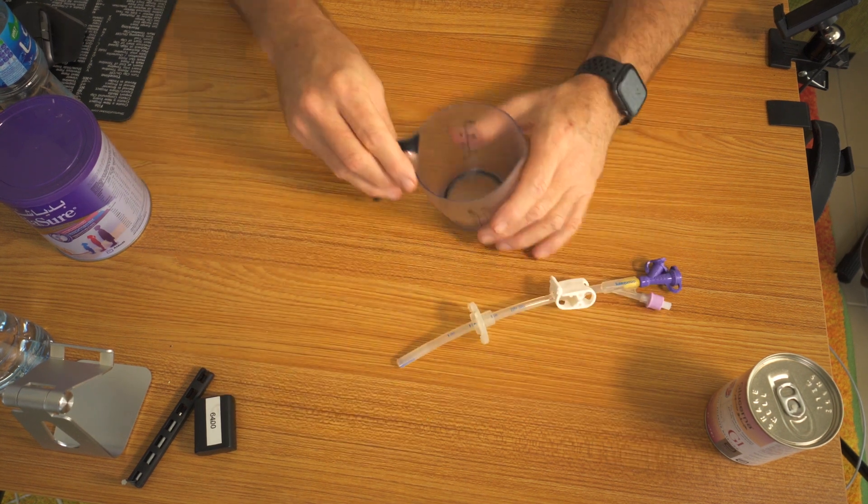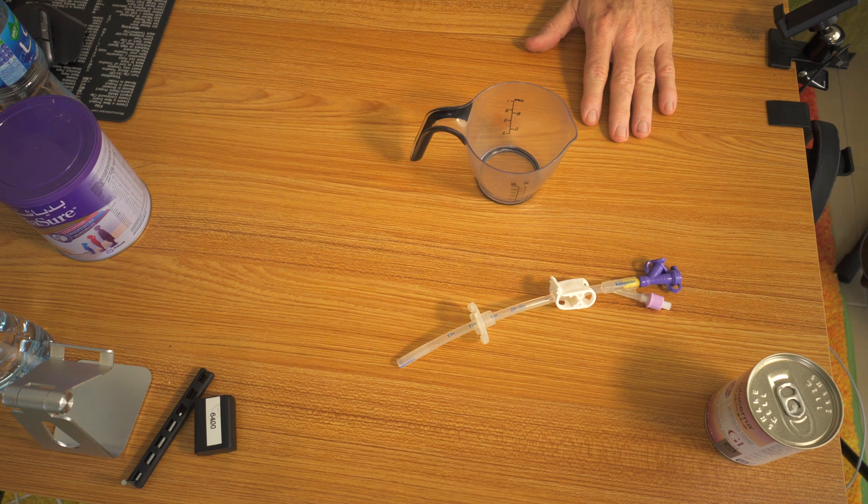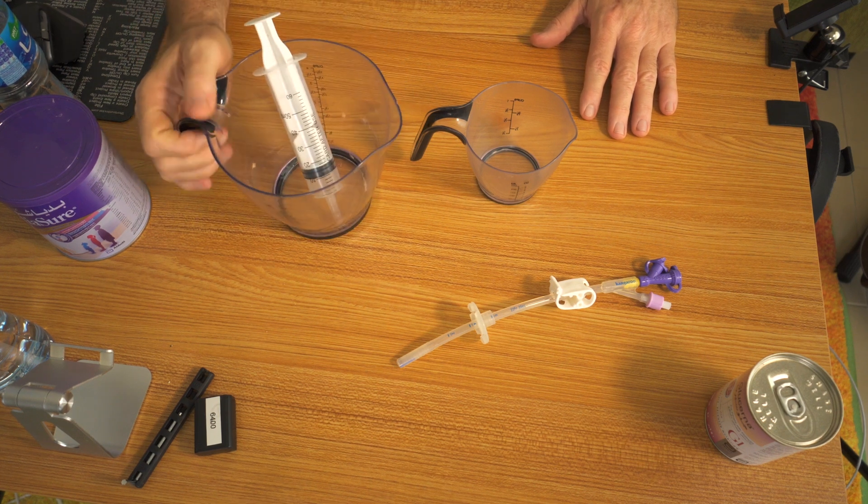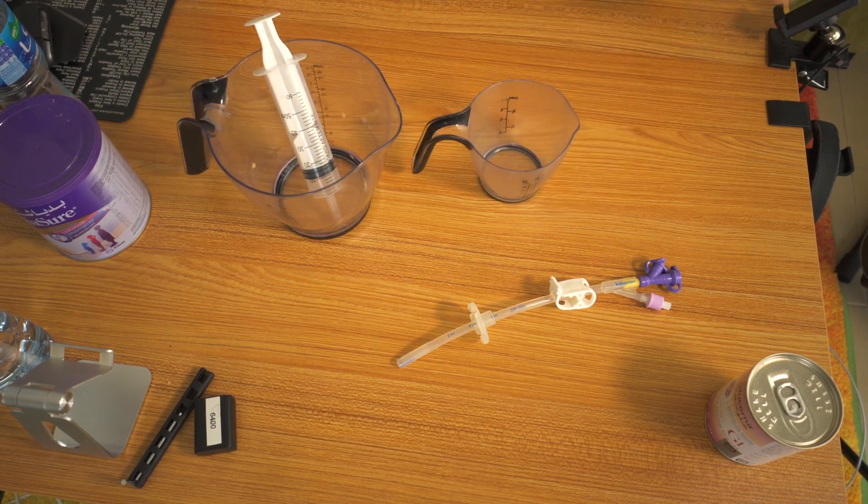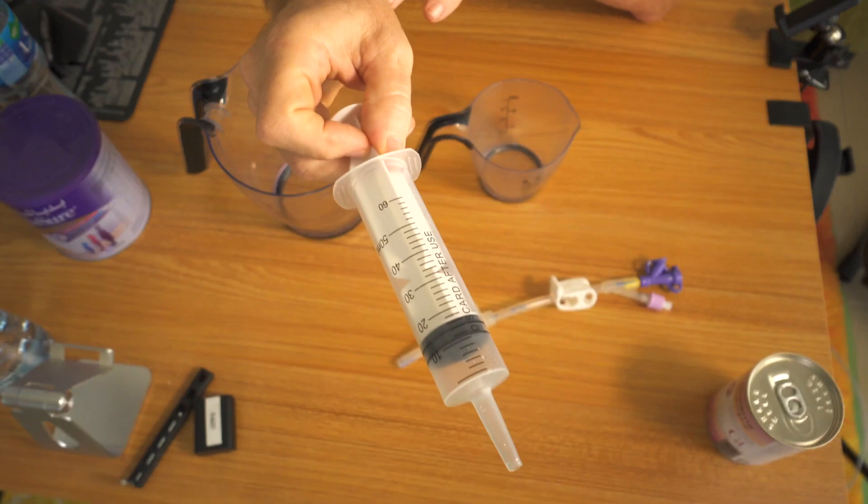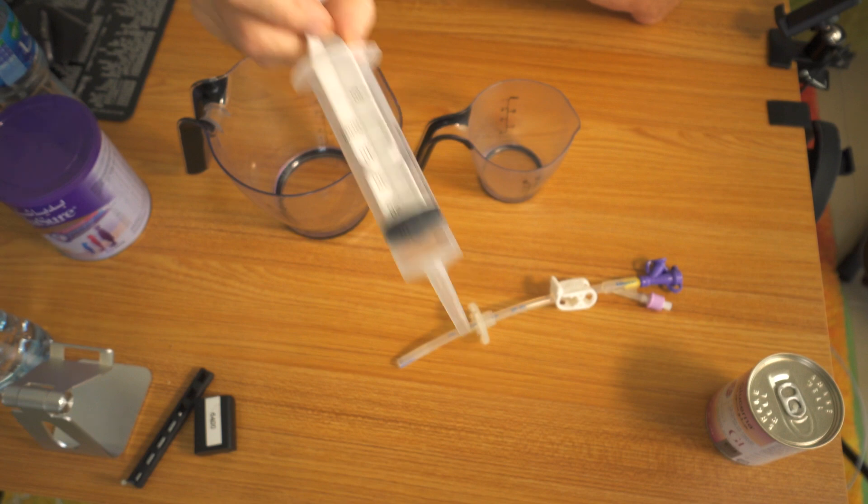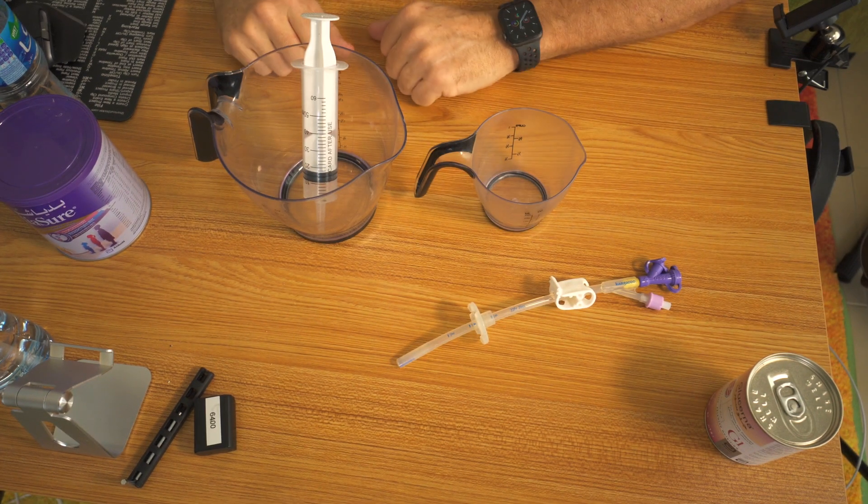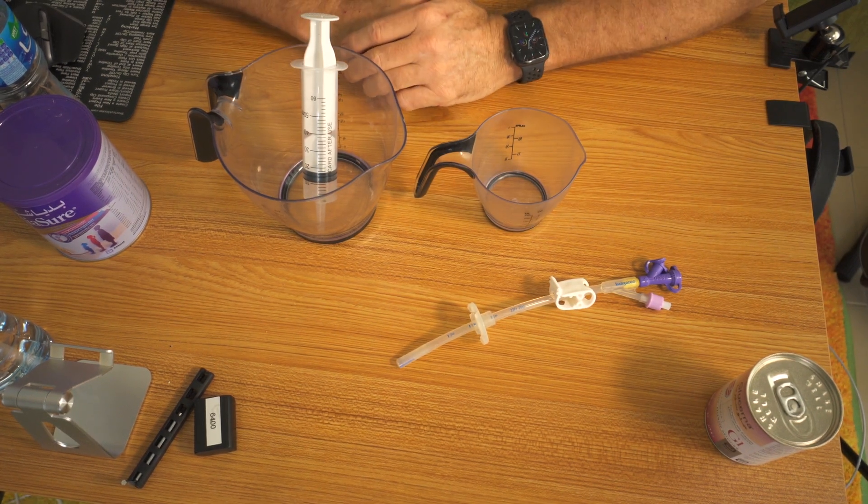Next thing you want to do is have a couple of mixing cups, a big one and a little one, and your syringe, which is how you get your food into the tube. So got all my stuff together, now let's get going.